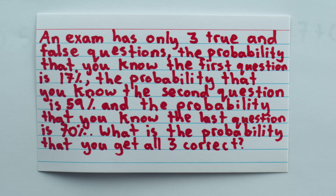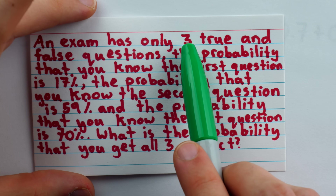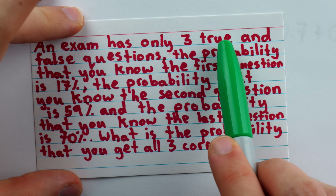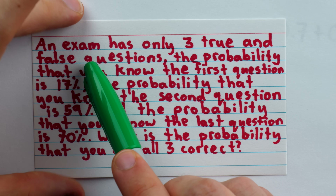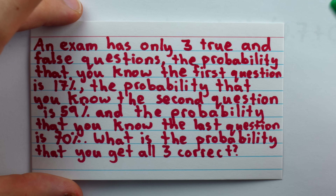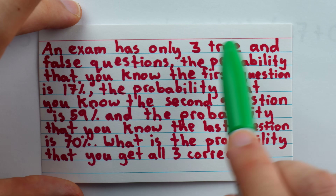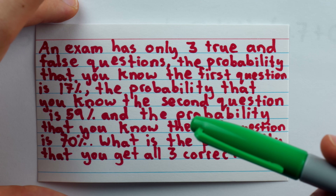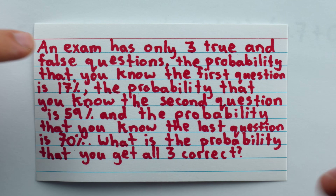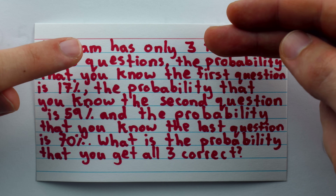In my opinion, the student's solution is far better than the professor's. It's totally bizarre that the question would mention that the problems are true or false questions unless you were supposed to solve it the way the student did. There's no reason to mention they're true or false unless you're supposed to take that into consideration. The professor's solution would be just as valid if we ignored that detail.